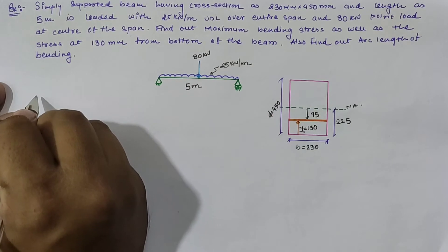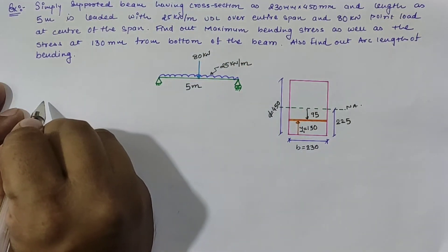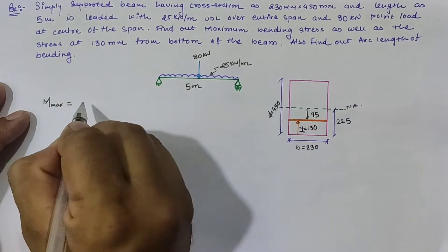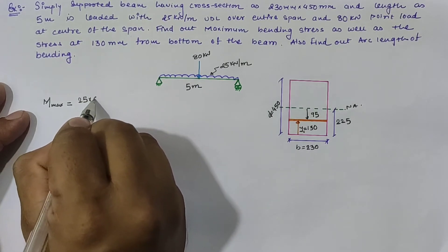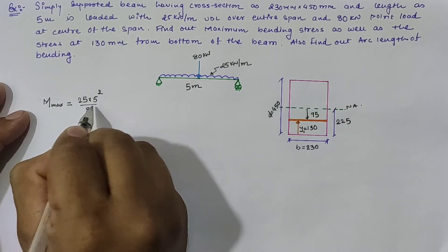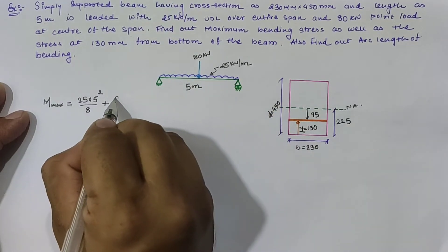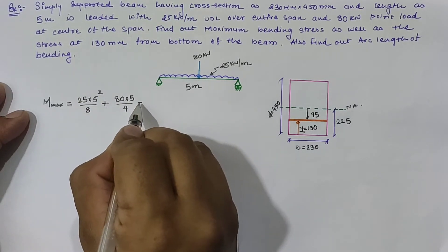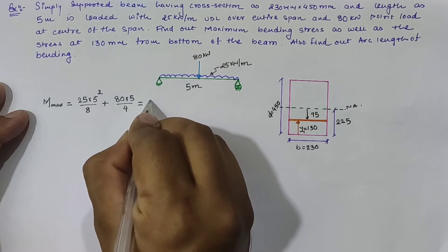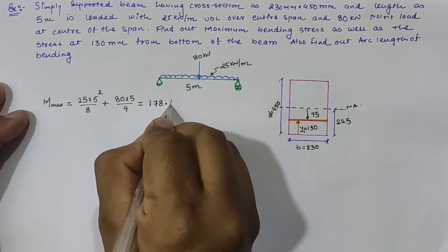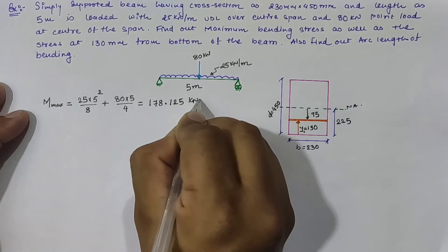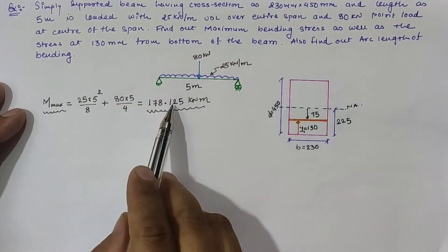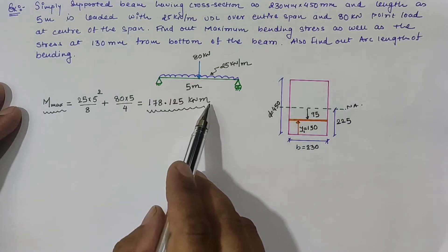For this loaded condition, the maximum bending moment is calculated as WL²/8 for the UDL plus WL/4 for the central point load. So it is (25 × 5²)/8 plus (80 × 5)/4, giving a maximum moment of 178.125 kNm.